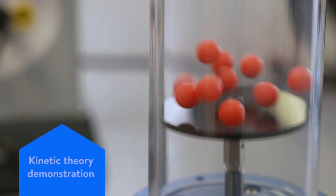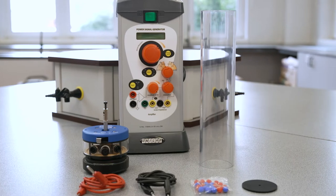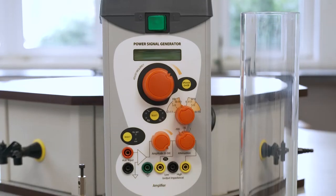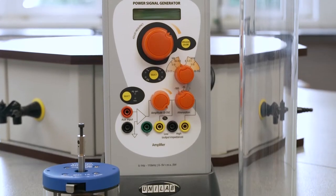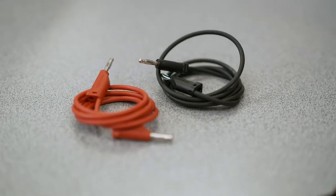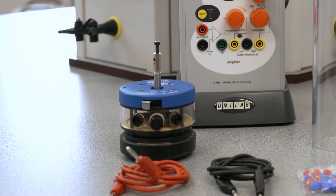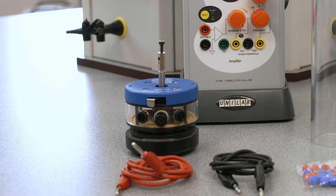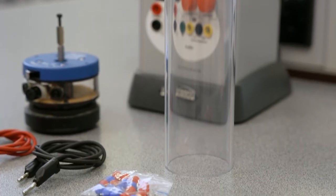In this video we're demonstrating kinetic theory. To complete this experiment you will need a signal generator such as this one by Unilab, four millimeter electrical leads, and also a Philip Harris vibration generator with an accessory kit which contains the plastic disc, colored balls and transparent tube that you require for this experiment.